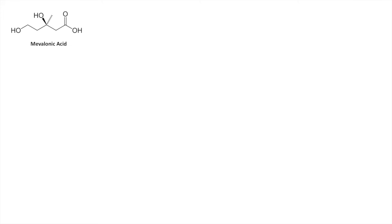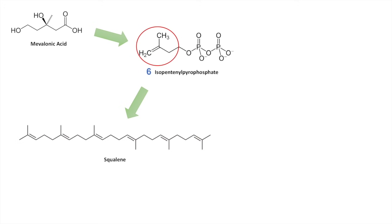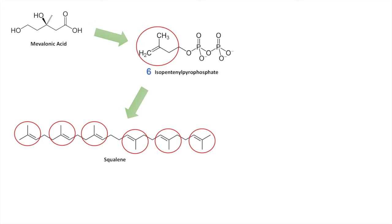Looking more at the chemistry of these intermediates: mevalonic acid is converted through the mevalonate pathway into isopentanyl pyrophosphate, and as mentioned, it takes six isopentanyl pyrophosphates to make squalene. You can actually see the different parts of isopentanyl pyrophosphate within squalene — that section of isopentanyl pyrophosphate is used six times. Once squalene is produced, its backbone undergoes circularization to produce the non-aromatic rings of cholesterol, going through a few different reaction steps into lanosterol.